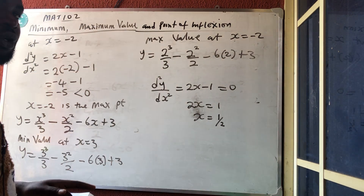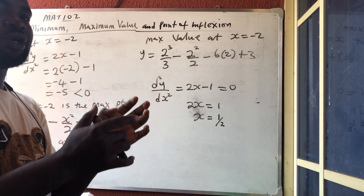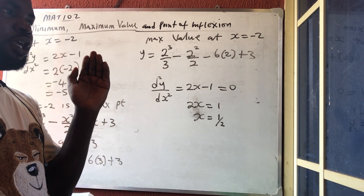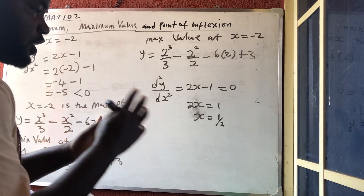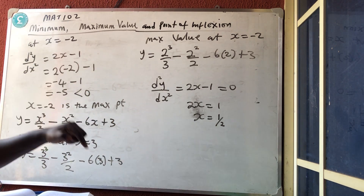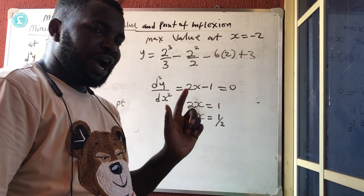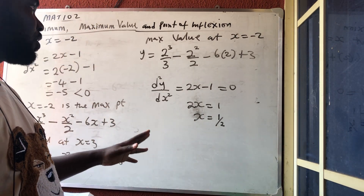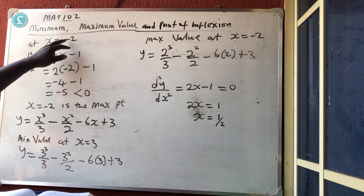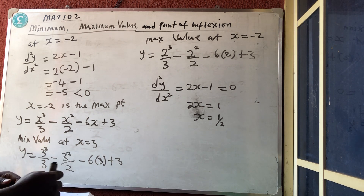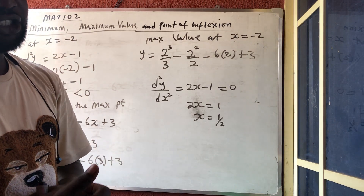So to summarize: find your critical points by differentiating once and equating to 0. Then differentiate a second time — if the result is less than 0 you have a maximum point, if greater than 0 you have a minimum point. When x is negative we get maximum value; when x is positive we get minimum value. Thank you very much for watching and God bless you. Please don't forget to like, share and subscribe.